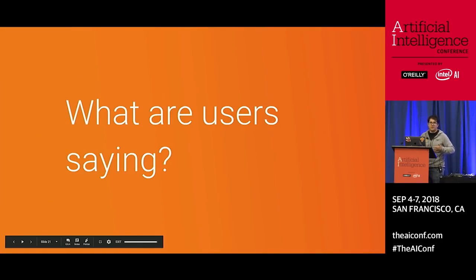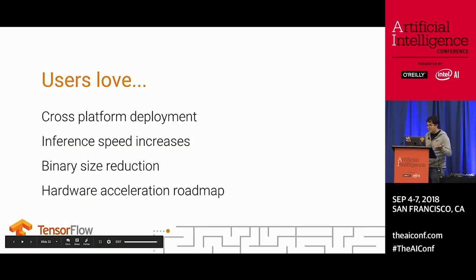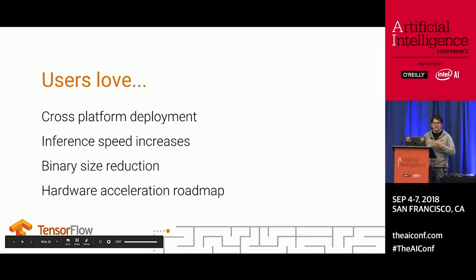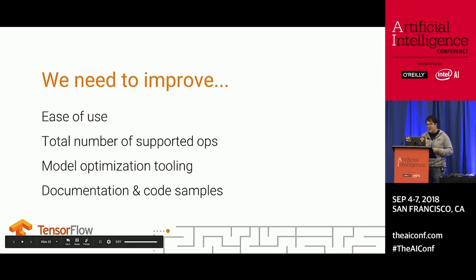We introduced TensorFlow Lite last year and have been asking users what they think. They really love the cross-platform deployment — deploying to iOS and Android with the same format. They like that they can decouple the distribution of the binary from the distribution of the model, they like the inference speed increases, and they're excited about the hardware acceleration roadmap. The biggest feedback we got is that we should focus on ease of use, add more ops, work on model optimization, and provide more documentation. We've listened.